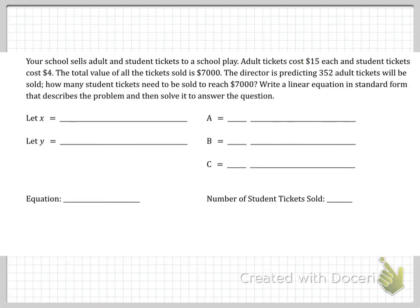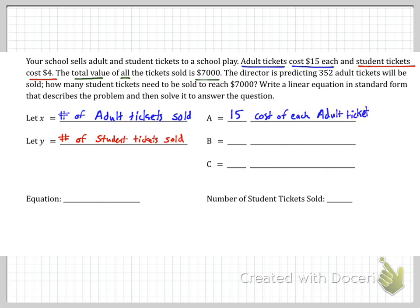For the next problem, your school sells adult tickets and student tickets at a school play. Adult tickets cost fifteen dollars each. Student tickets cost four dollars. Notice that we have two different items and each one has a rate associated with it. The total value is seven thousand. So we have adult tickets. We're going to call that x. And then number of student tickets is y. Make sure you say number of because the cost we already have. And it's the number of adult tickets and number of student tickets, which are the two variables in our equation to start. Fifteen is the rate for the adult tickets. Four is the rate for the student tickets. And seven thousand is the total value of all the tickets. So we have 15x plus 4y equals 7000. There we have our equation in standard form.